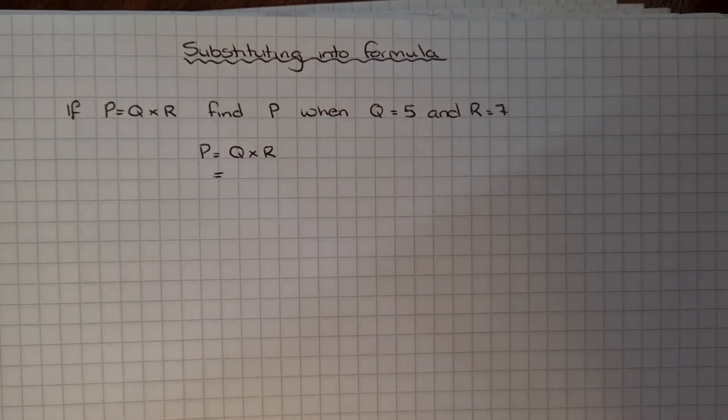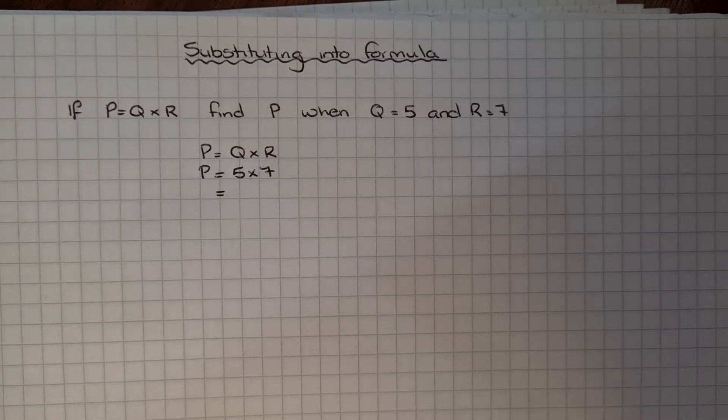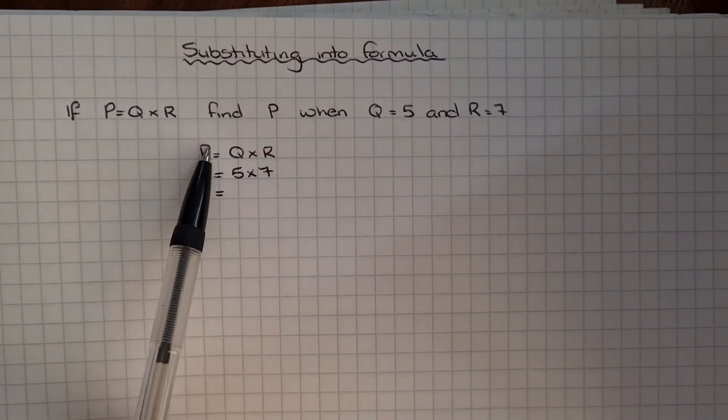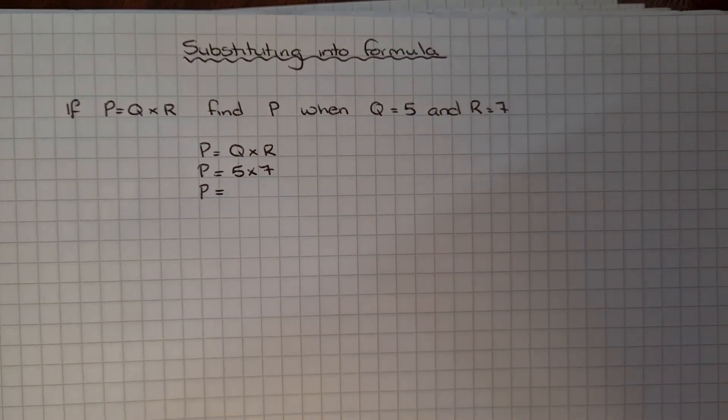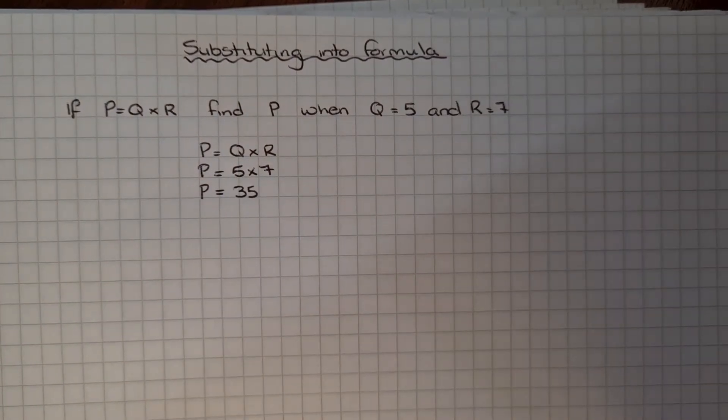On the next line, we're putting in 5 instead of Q and 7 instead of R, and we're keeping that P on the left hand side. Then we calculate the answer, which is 35.